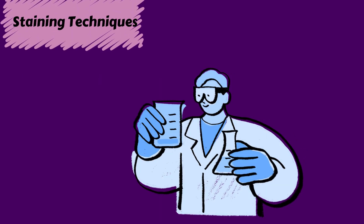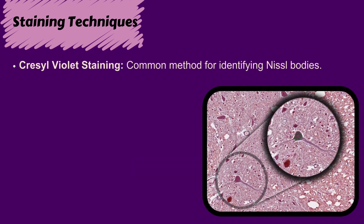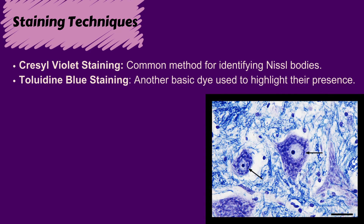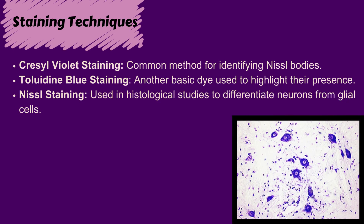Staining Techniques. To study Nissl granules, we use special staining techniques: Cresyl violet staining, the most common method, highlighting Nissl bodies in neurons; Toluidine blue staining, a basic dye used for contrast in histological studies; and Nissl staining, which helps differentiate neurons from glial cells and assess neuronal health.